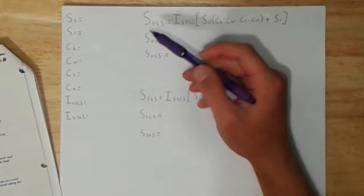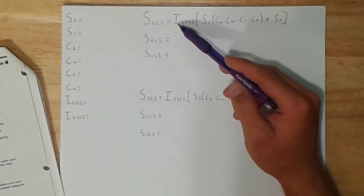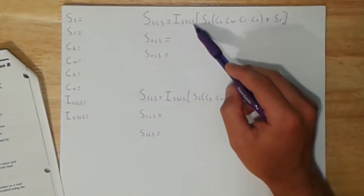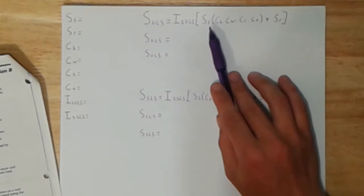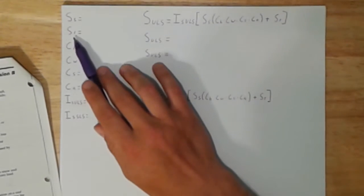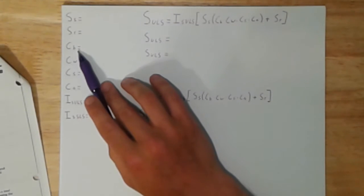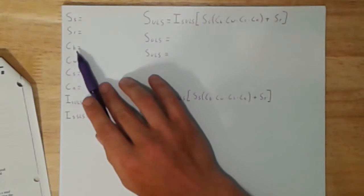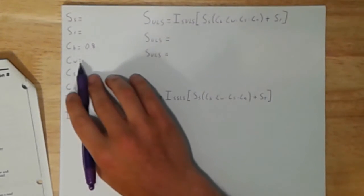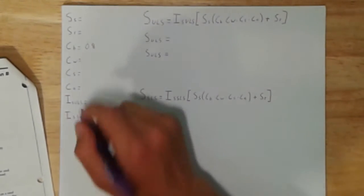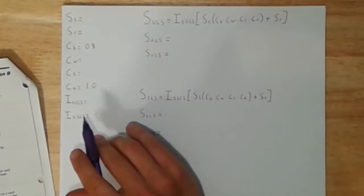So what this equation is: S is snow load, ULS is the ultimate limit states equals IS, which is the importance factor of the snow load. SS is the snow load. Then we get CB - or CS and CR. CS is snow, CR is rain. CB is the basic roof snow. In this class that I took, the answer for this one is always going to be 0.8, it's unitless. CW is the wind load. CS is the slope factor of the roof. CA is the shape factor, that one's always going to be 1. And the IS and IW are going to be your importance factors.